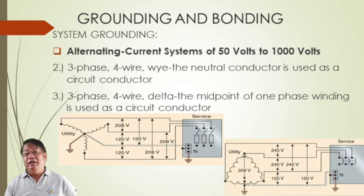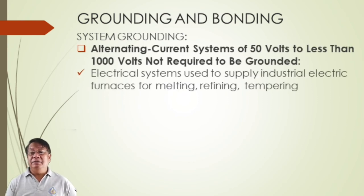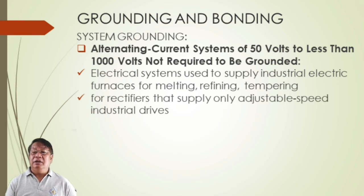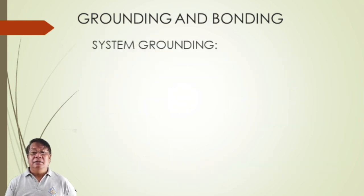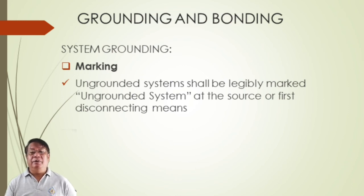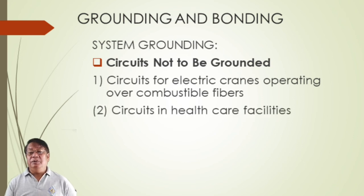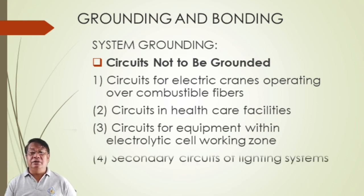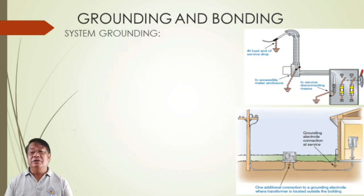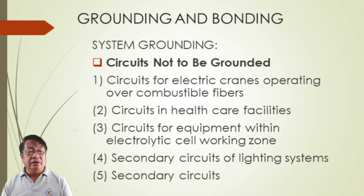Electrical systems used to supply industrial electric furnaces for melting, refining, and tempering using 50 to less than 1,000 volts are not required to be grounded. Circuits not to be grounded include: circuits for electric cranes operating over combustible fibers, circuits in healthcare facilities, circuits for equipment within electrolytic cell working zones, and secondary circuits of lighting systems.